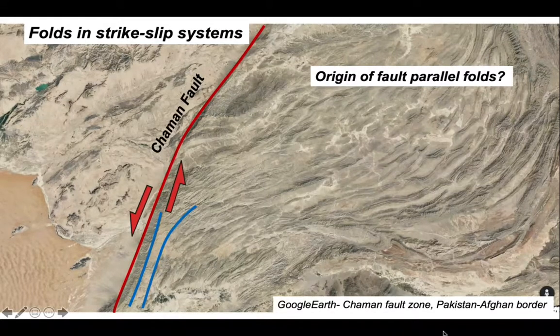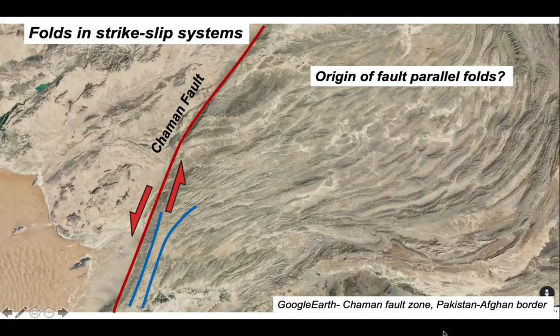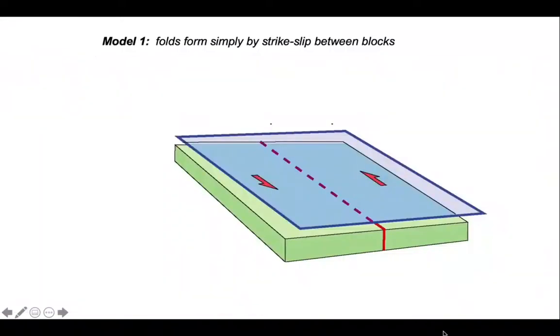So what's the origin of these fault-parallel folds? We're going to investigate two models. Here's the first one. In this model, a blue layer represents a sedimentary cover overlying a basement represented by the green blocks. Running at depth in the basement is a strike-slip fault which is left lateral.